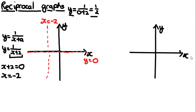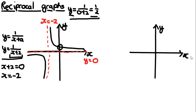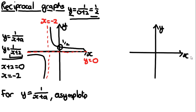We can sketch y = 1/(x + 2) by taking y = 1/x and shifting everything to the left by 2, because the asymptote has shifted to the left. There is now a y-intercept, since the graph has shifted left and crosses the y-axis. We already determined this is y = 1/2, when x = 0. In general, for y = 1/(x + a), one asymptote becomes x = -a.